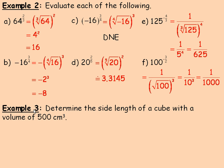Last example in number 3 here. We are asked to determine the side length of a cube with a volume of 500 cubic centimeters. So for a perfect cube when all sides are the same, the volume is just the length of a side cubed.